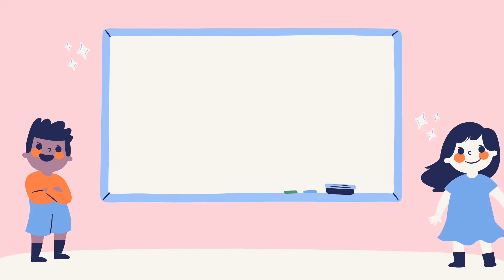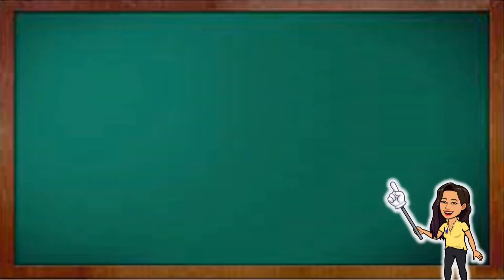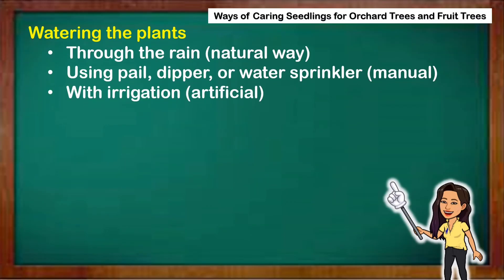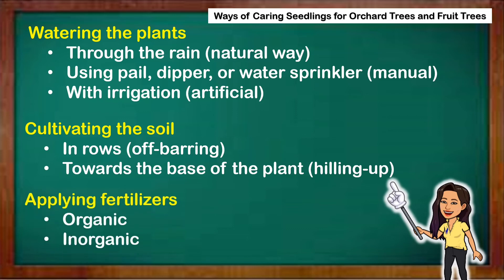Here are the ways of caring for seedlings, orchid trees, and fruit trees. We can water plants through rain — that is the natural way. We can use a pail, dipper, or water sprinkler — that is manual. Using irrigation is artificial. We can cultivate the soil in rows — that is called off-bearing. Cultivating the soil towards the base of the plant is called hilling up. We can also apply organic or inorganic fertilizers so our plants will grow healthy.